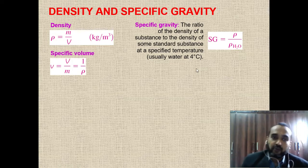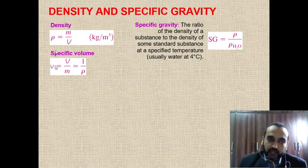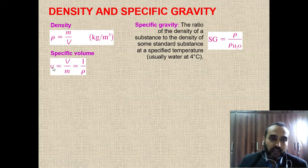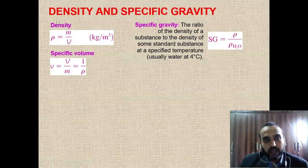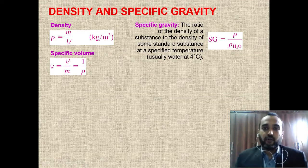Specific volume is the volume divided by mass (v = V/m). For specific properties, we always use lowercase letters — so 'v' represents specific volume. Density and specific volume are reciprocals of each other: v = 1/ρ. So density is mass over volume, while specific volume is volume over mass — they are the inverse of each other.